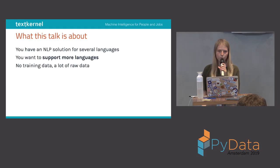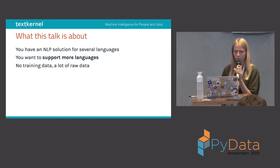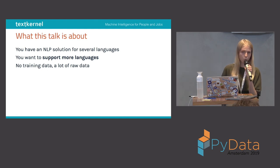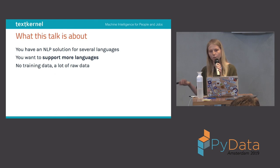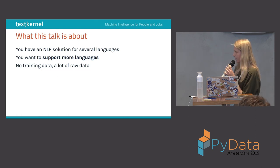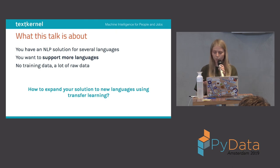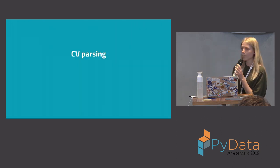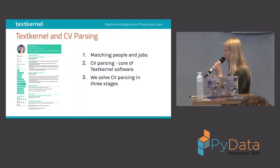Let's say you have some NLP solution for several languages — maybe a named entity recognition solution or a sentiment analysis solution — and now you'd like to support more languages but you don't have any training data available. It's really expensive to acquire training data and it takes time, but what you do have is raw data. This talk is about how you can expand your solution to new languages using transfer learning, explained on the example of a CV parsing task we're trying to solve at TextKernel.